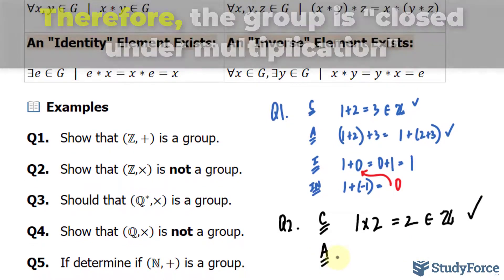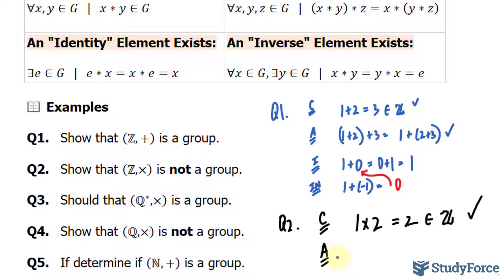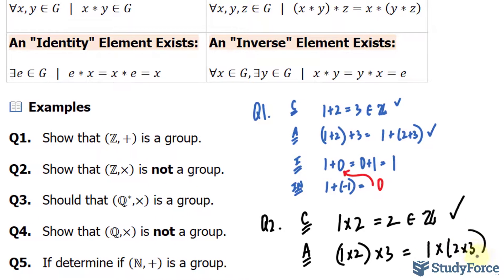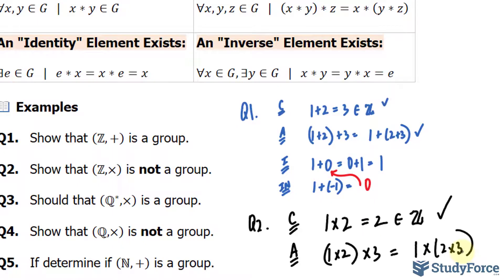Now associativity. Let's pick three elements: 1, 2, and 3. (1 × 2) × 3 is the same as 1 × (2 × 3). They both give us 6, and 6 is found in Z. So that passes.